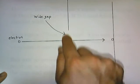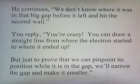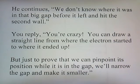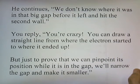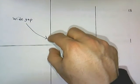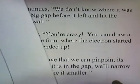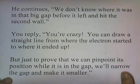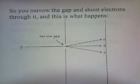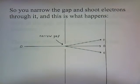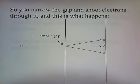But your friend says no, you didn't see what it was doing — it could have been bouncing around. So what you do is say: just to prove that you can pinpoint the location while it's in the gap, we'll narrow the gap and make it smaller. We're going to prove that the electron was not bouncing all around here — we'll just make it more narrow. And if we get the same result, we know that the electron was probably where we think it is. So you narrow the gap and shoot electrons through it.